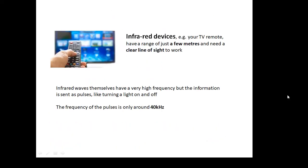Infrared devices — talking specifically about TV remotes — have a range of just a few meters and need a clear line of sight to work, but they don't use a great deal of power. The infrared waves themselves have a very high frequency, but an infrared signal from a remote is basically just an infrared LED flashing on and off, and the frequency of the pulses is only around 40 kilohertz.